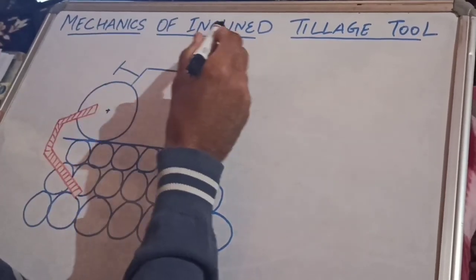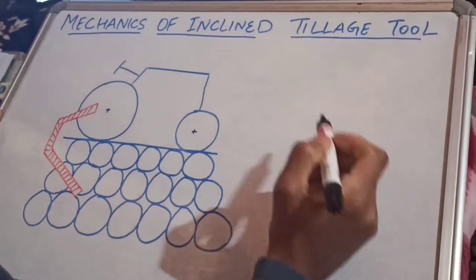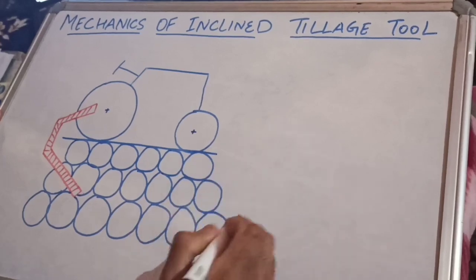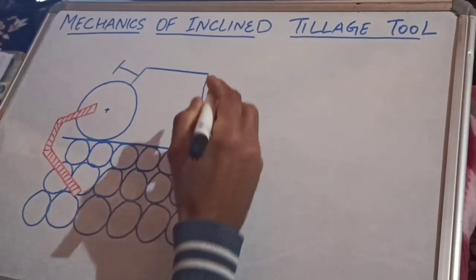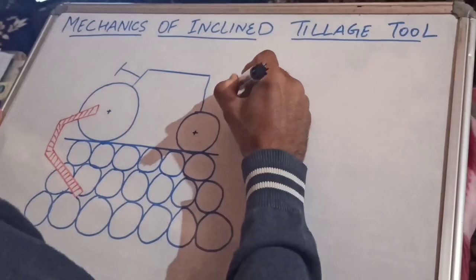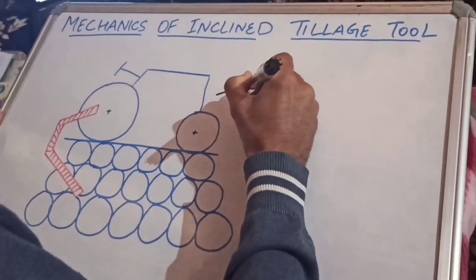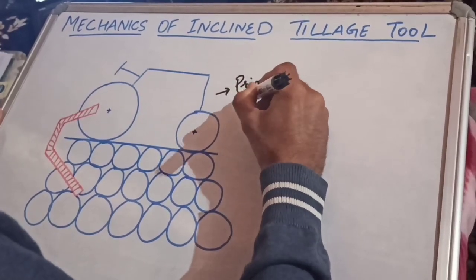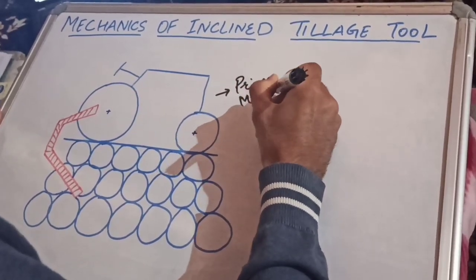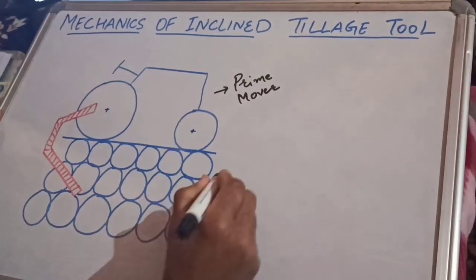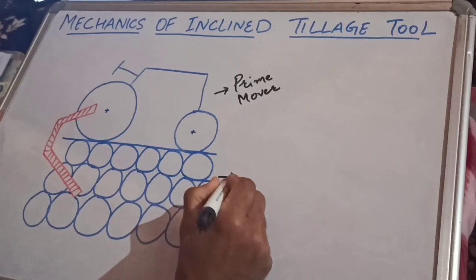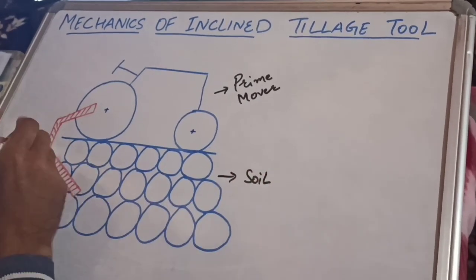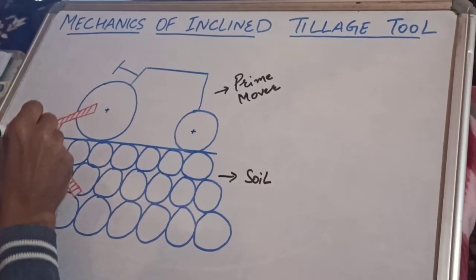Today's topic is the mechanics of an inclined tillage tool. There are three process parameters involved in it. The first one is the prime mover, which is usually a tractor. Then there are soil particles in which the prime mover operates, and there is one tillage tool.